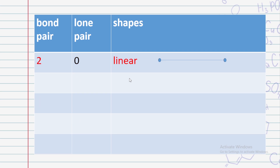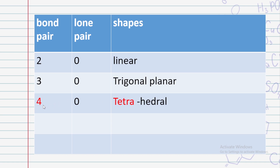Two bond pairs and no lone pair → linear shape. Three bond pairs → trigonal pyramidal parallel. Four bond pairs → tetrahedral. Four bond pairs with zero lone pairs → tetrahedral. Five bond pairs → trigonal bipyramidal.